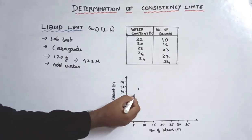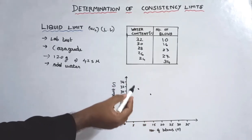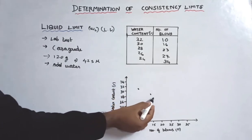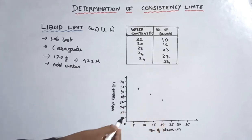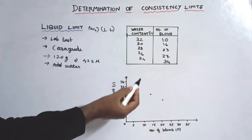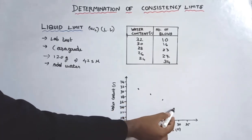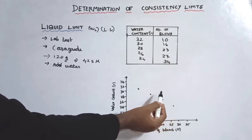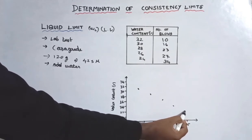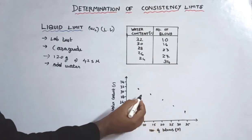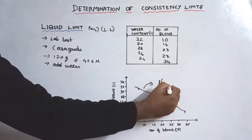The value of 30% water content is around 16 blows. Next, 28% water content corresponds to 23 blows, somewhere in this area. Then 26% is at 27 blows. Then 24% corresponds to 34 blows. We draw a best-fit line through these points. This line is called the Flow Curve.